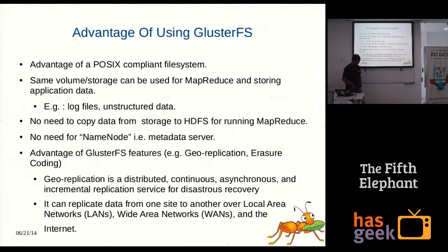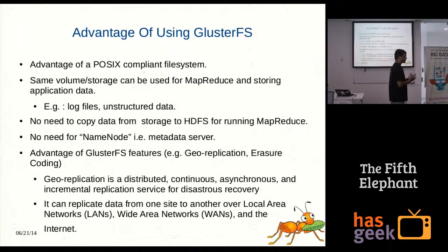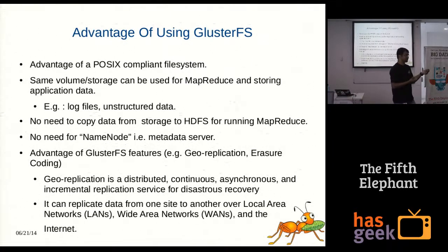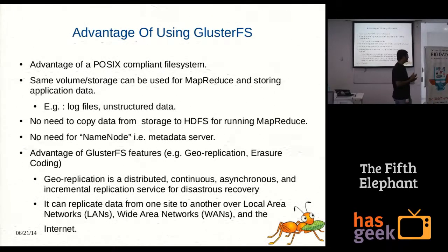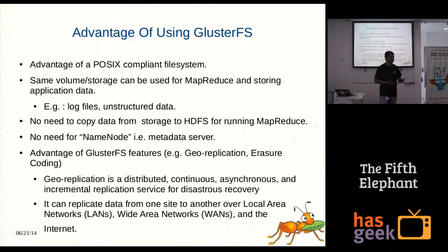In HDFS architecture, there are two kinds of nodes: the name node, where metadata is stored, and the data node, where tasks actually run. Whenever a job runs, it goes to the name node to find where the block is present and runs the job there. In GlusterFS, you don't need a name node, so you can save a lot of hardware and management overhead.